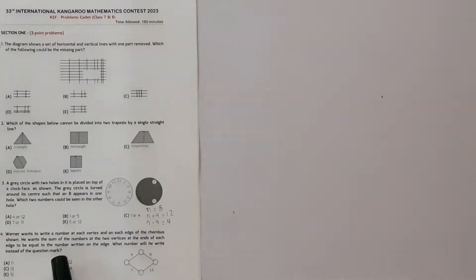Wagner wants to write a number at each vertex and on each edge of the rhombus shown. He wants the sum of the numbers at the two vertices at the ends of each edge to be equal to the number written on the edge.